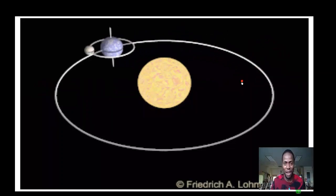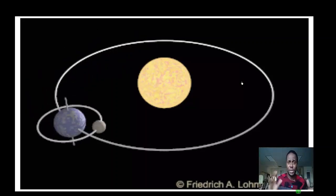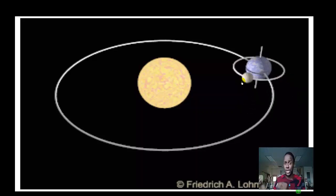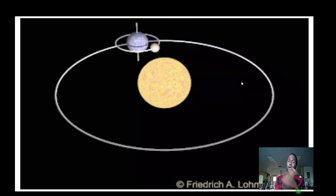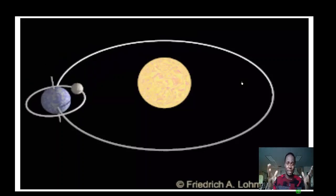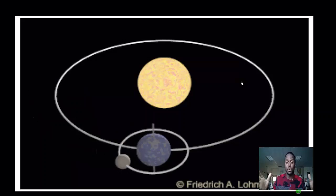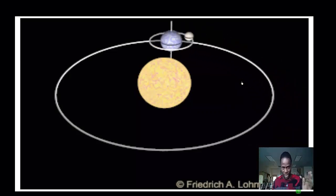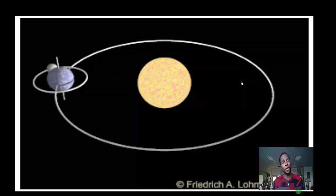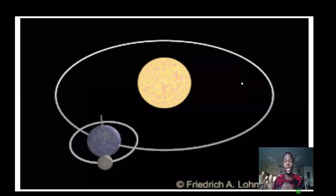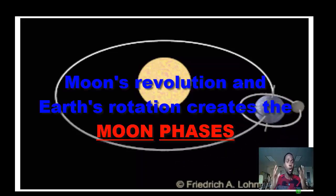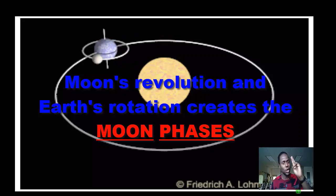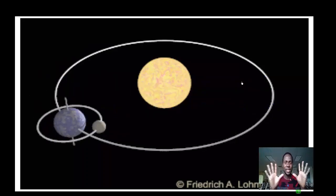Now let's dive deeper into why we have moon phases. The reason we see different shapes and different portions of the moon lit at different times is because of the moon's position as it revolves around the Earth. Different positions give different angles on the proportion of the moon lit by the Sun. Keep in mind, half of all astronomical objects always face the Sun and the other half is always in complete darkness. We have eight moon phases.